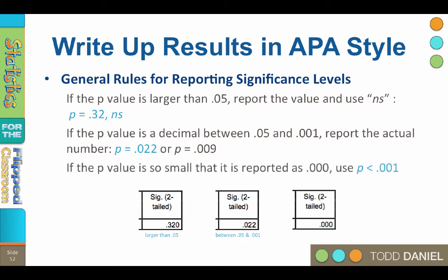If the p-value reported is so small that SPSS reports it as 0.000, then you should write P less than 0.001. There is no such thing as a true probability of zero in statistical testing, so we would never report P equals 0.00. If you'd like to know the actual p-value in SPSS, double-click on that 0.00 in the significance box and the software will give you the actual p-value out to several decimal places.